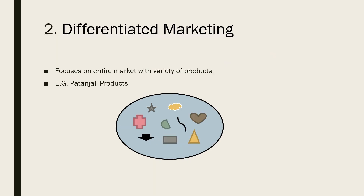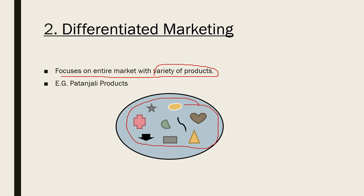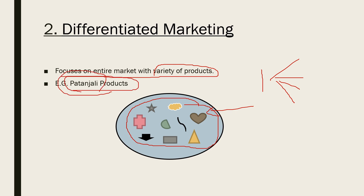Next is differentiated marketing — it focuses on the entire market with a variety of products. One marketer produces different types of products. For example, Patanjali: it is one company producing different types of products like cosmetics, FMCG products, biscuits, healthy products, creams, face washes, soaps, etc. The company is one but they produce many products for the whole market.